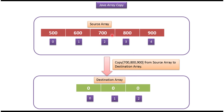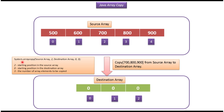Suppose I want to copy 700, 800, and 900 from the source array to the destination array. Then I have to use the arraycopy method of the System class. In the arraycopy method I have to pass the source array and the starting position in the source array, which is 2, because I want to copy 700, 800, and 900. Then I pass the destination array, the starting position in the destination array which is 0, and then the number of elements to be copied, which is 3. Once this method is executed, the destination array will be filled with 700, 800, and 900 — copied from the source array.